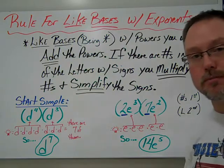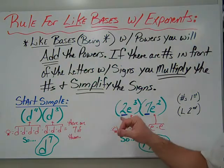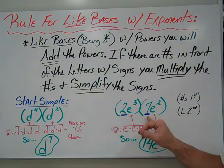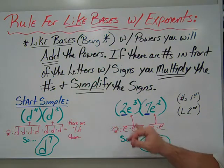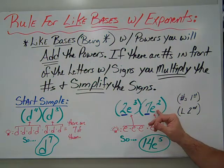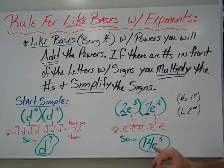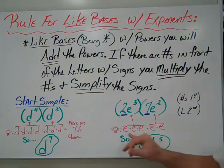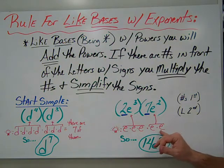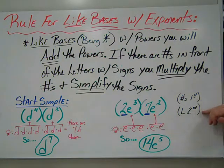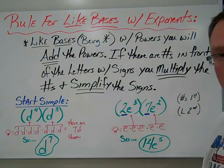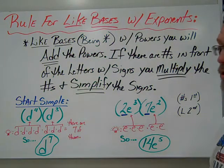In our second example we add numbers: two times seven gives us 14. We have three e's here and two e's here, so that gives us e to the fifth. The rule is: multiply your numbers first, then handle the letters — add the powers of like bases. With multiplication, unlike bases just come down into the answer.